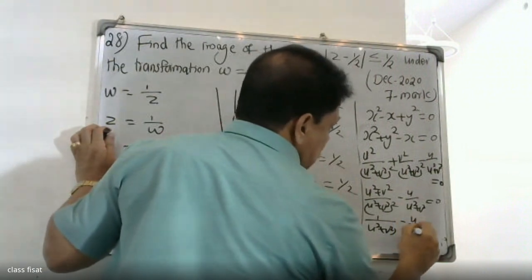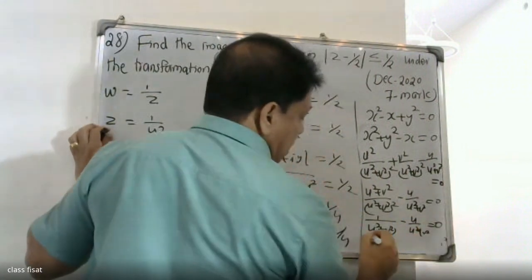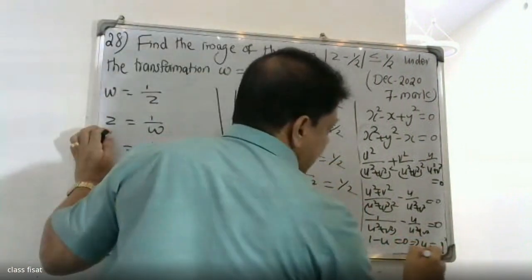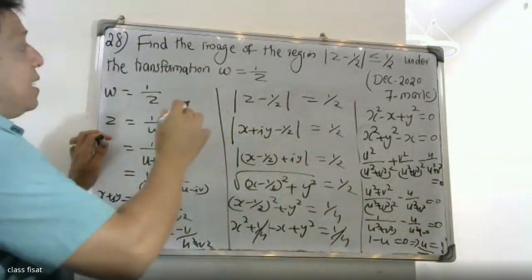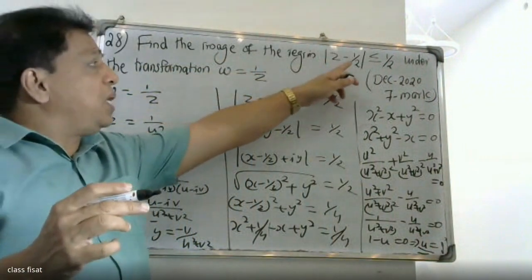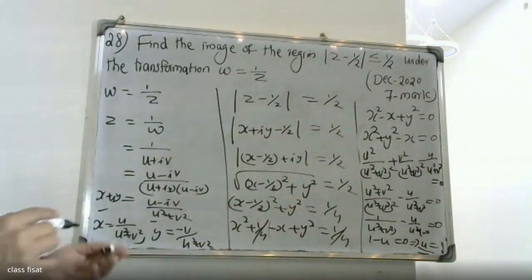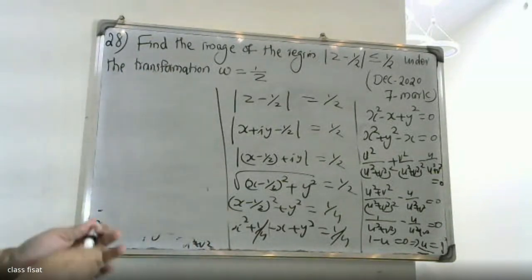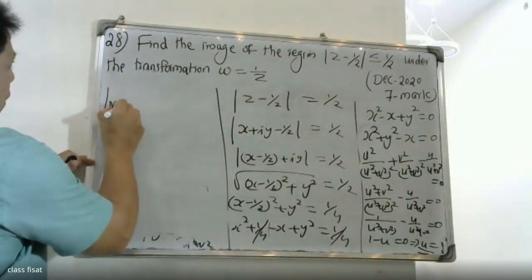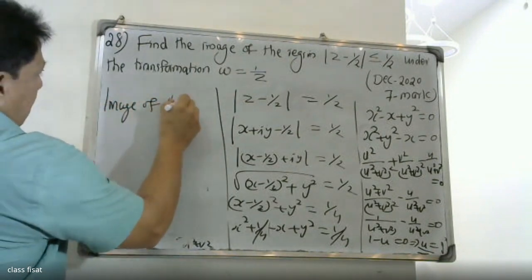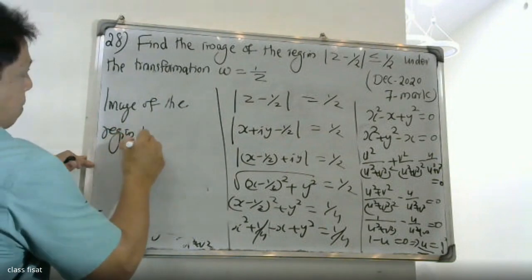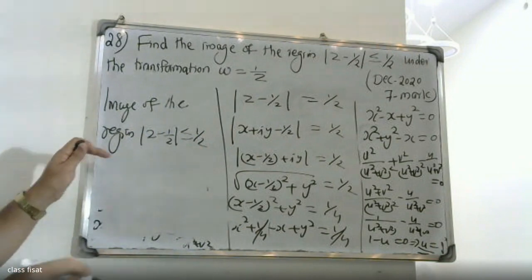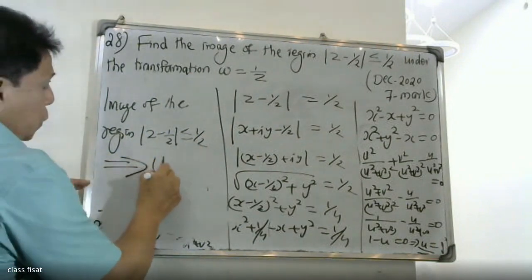Therefore, 1 minus u is equal to 0, which gives u is equal to 1.